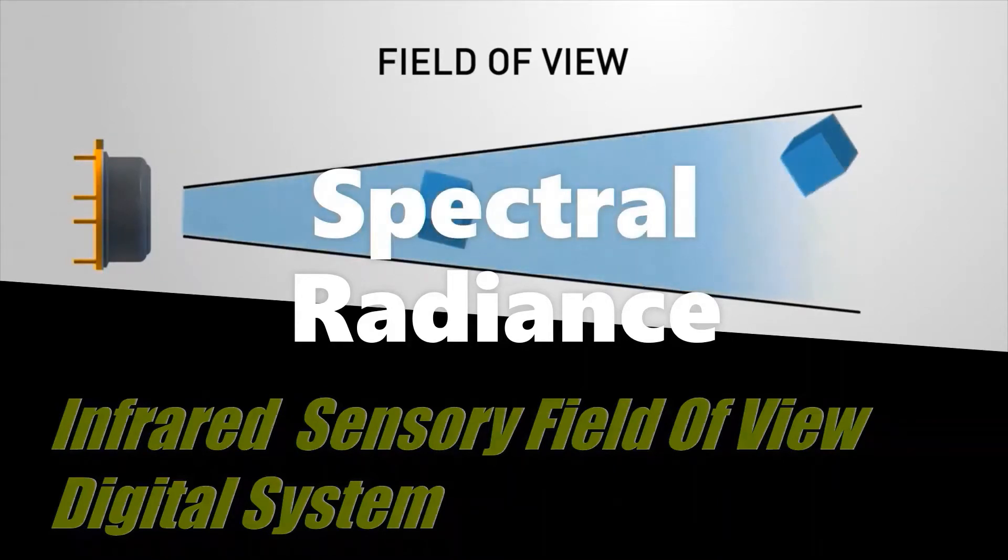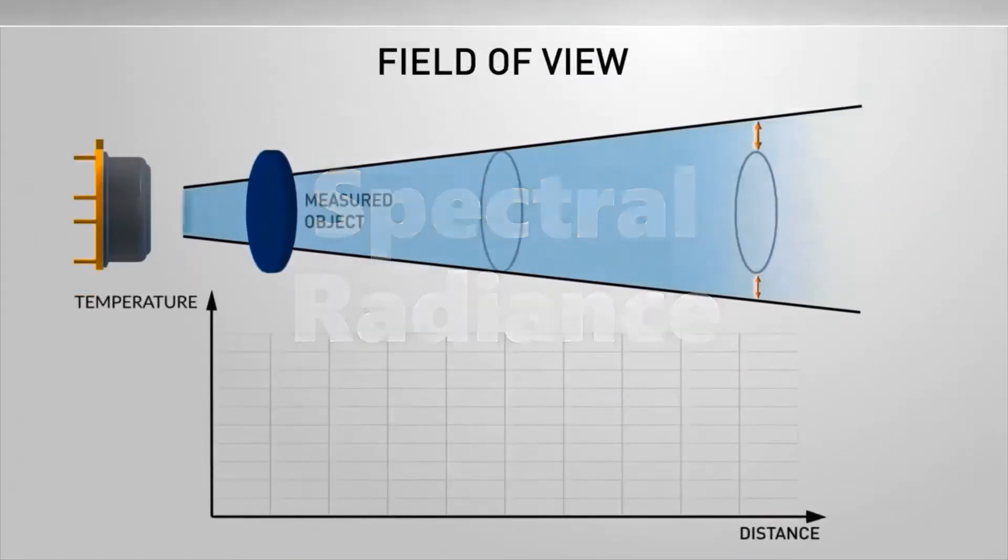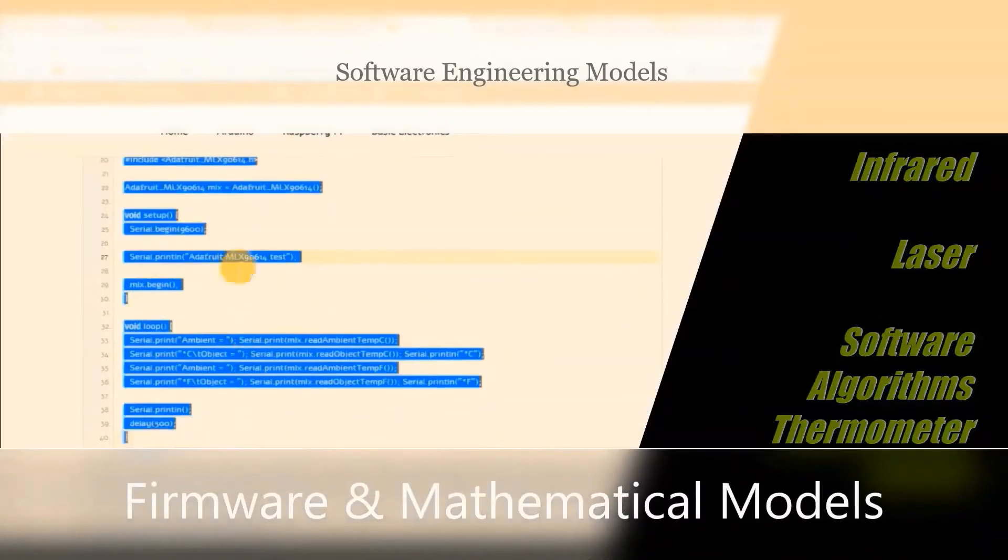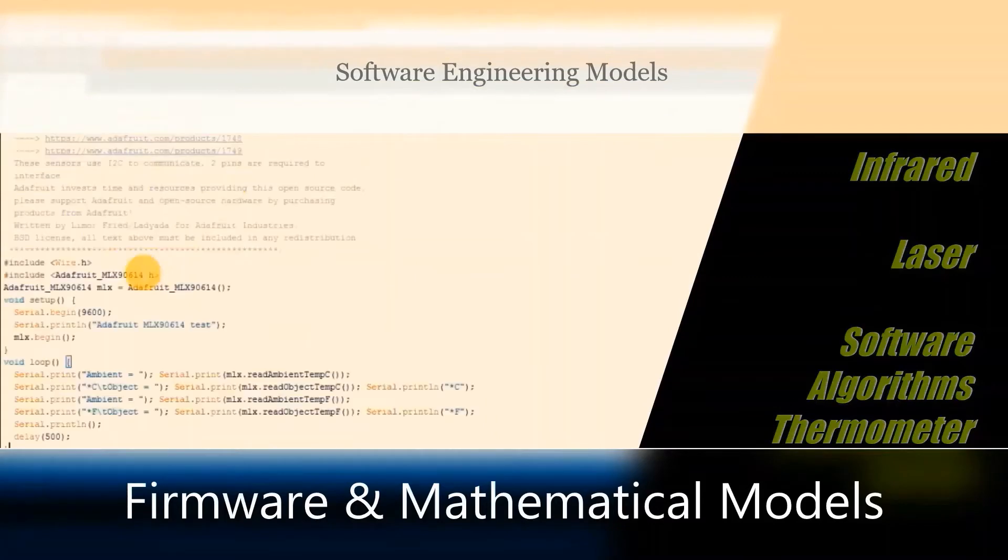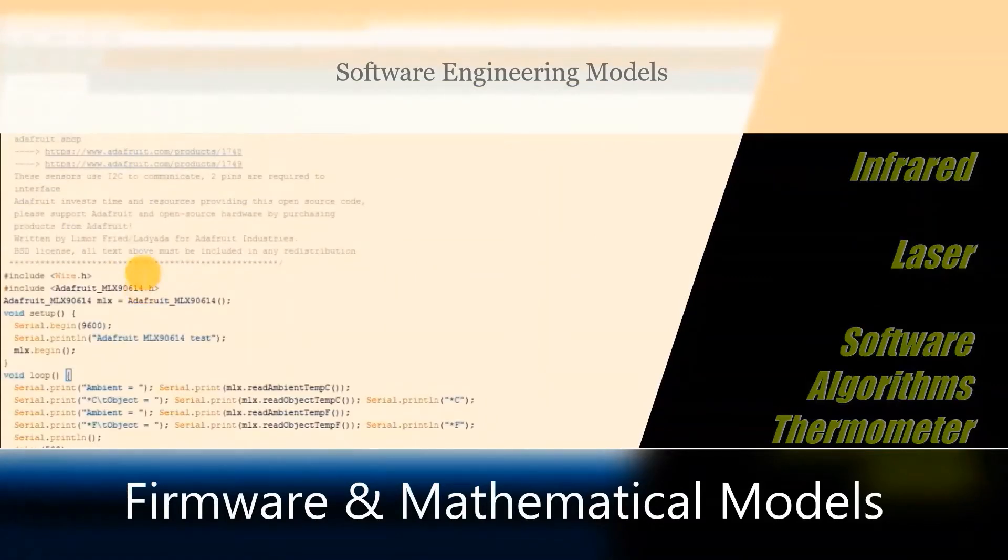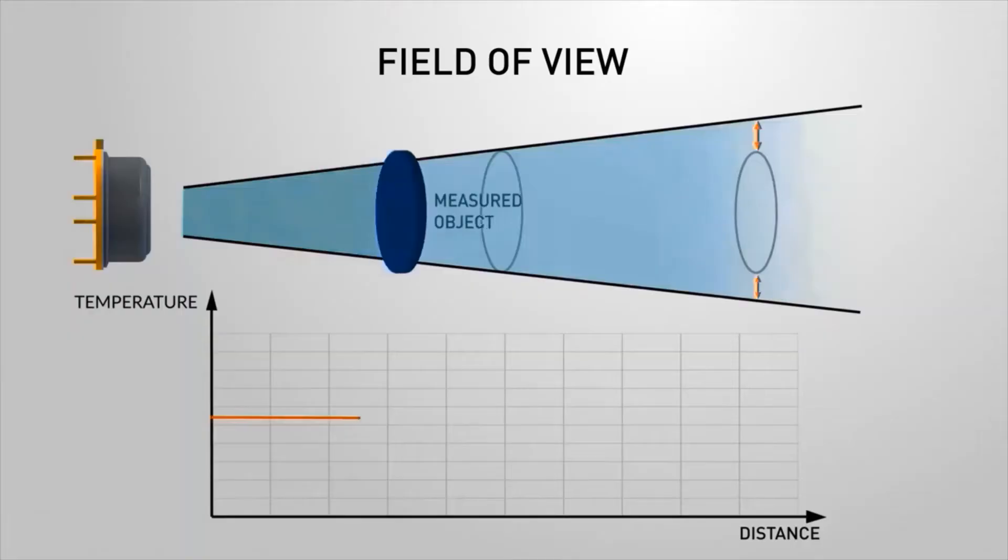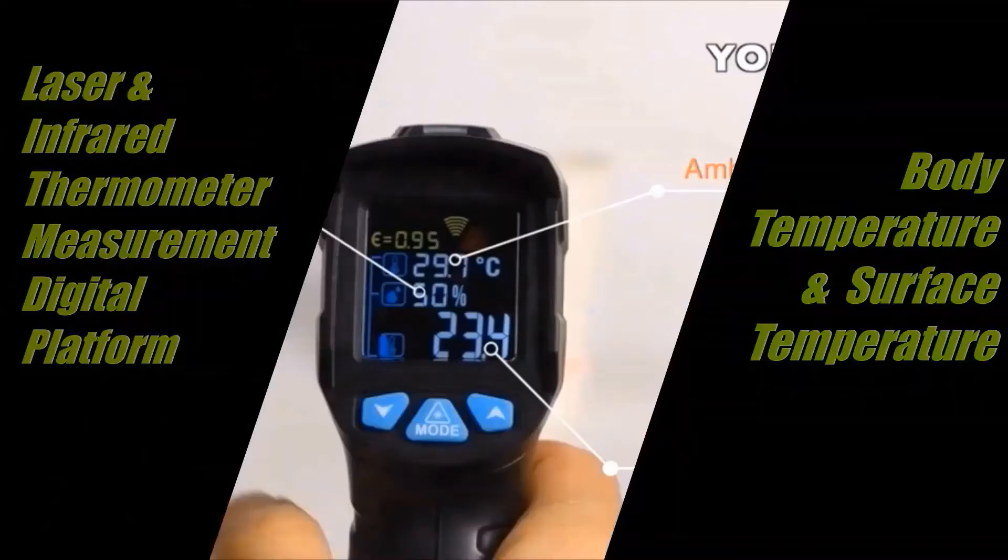Emissivity parameters: All objects reflect, transmit and emit energy. The emitted energy can indicate the object's temperature. So when the infrared thermometer system measures the surface temperature, the instrument can receive all three kinds of energy, including energy reflected from other light sources.